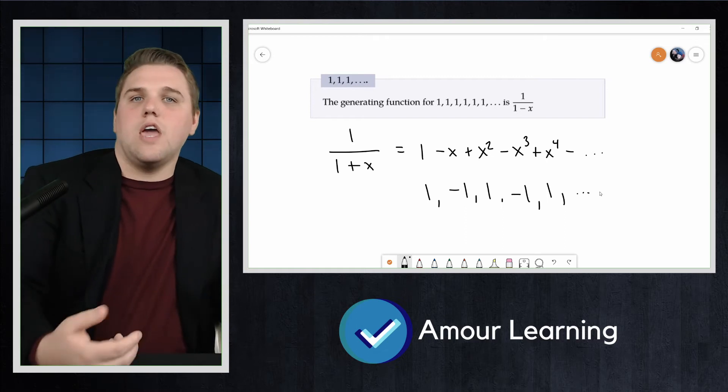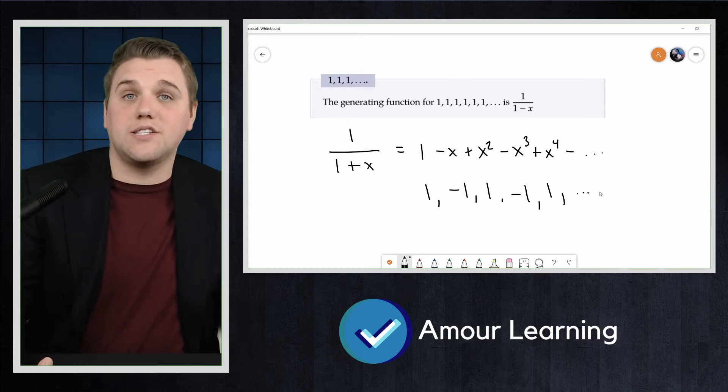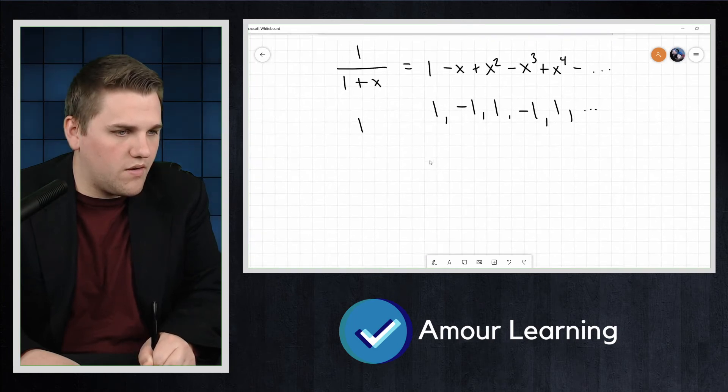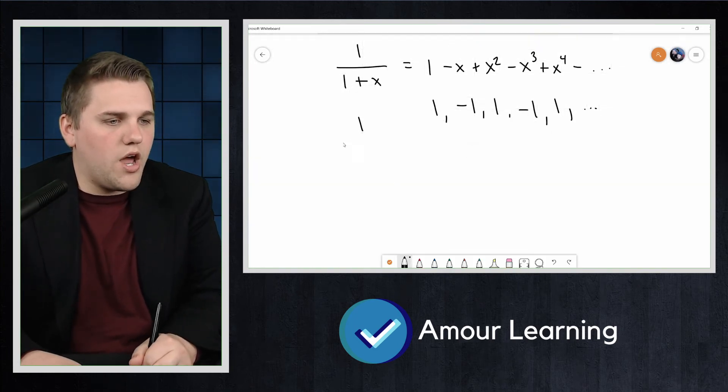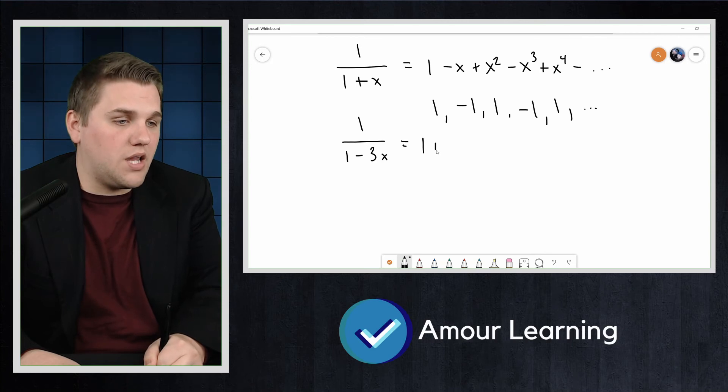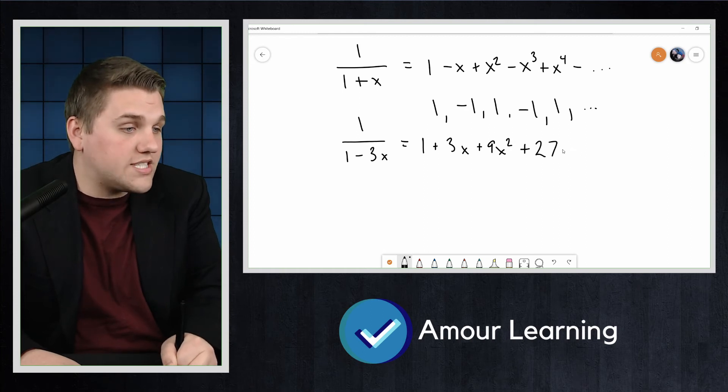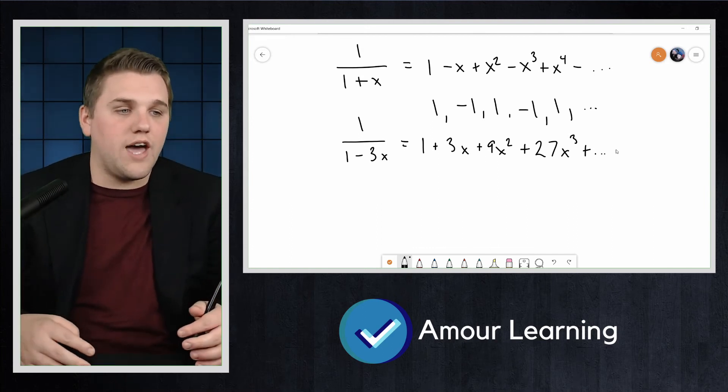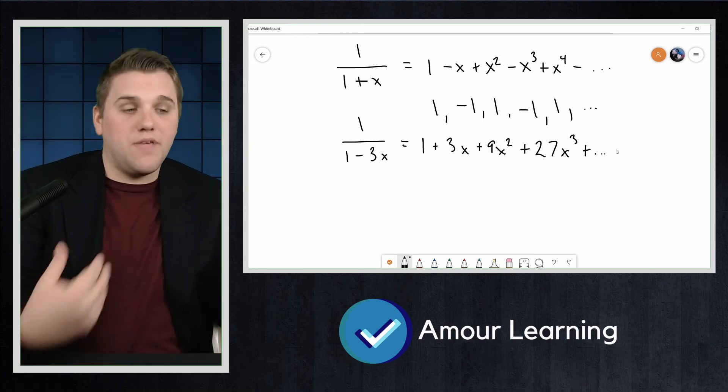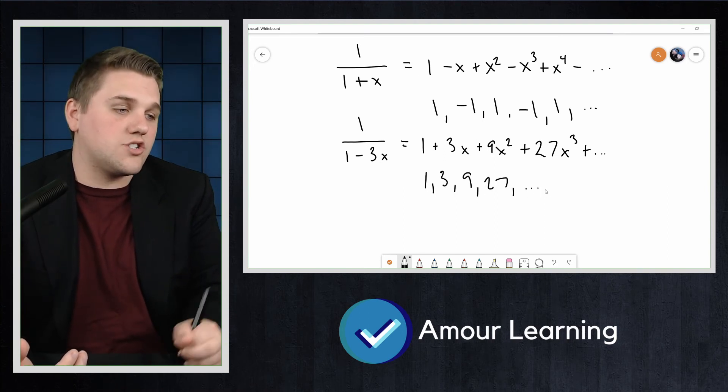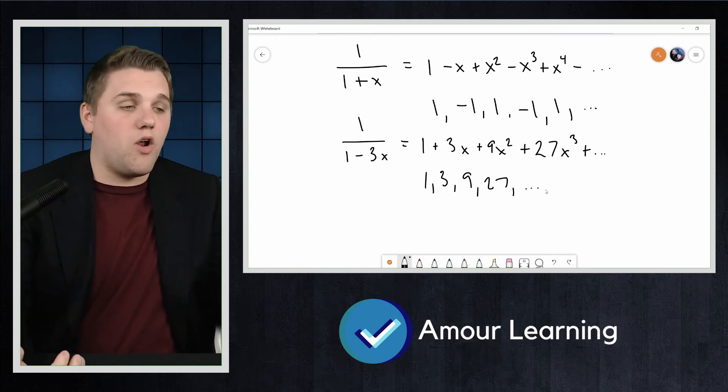If we replace x by 3x, we would get 1/(1-3x), which would be 1 + 3x + 9x^2 + 27x^3 and so on. All we're doing is plugging 3x into that original generating series. This series generates the sequence 1, 3, 9, 27, and so forth.